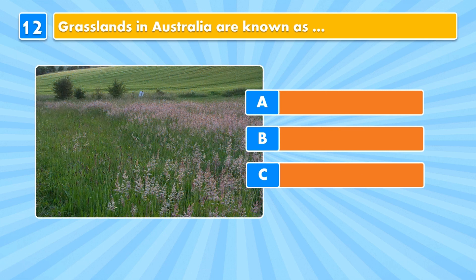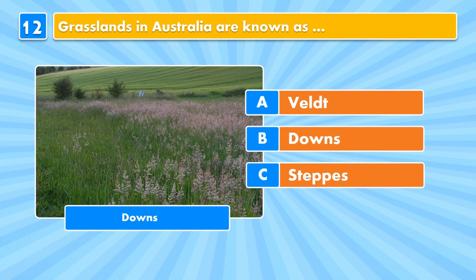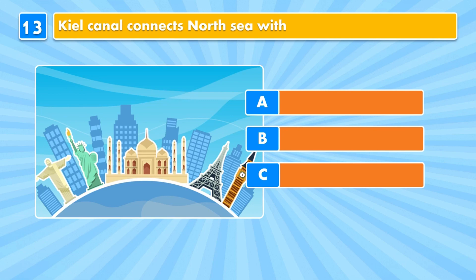Question twelve: grasslands in Australia are known as — Veldt, Downs? Answer: Downs.